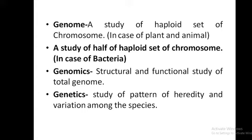Before actually going to chromosomes, there are some terms which need to be known. That is genome — a study of haploid set of chromosomes in case of plants and bacteria. There are 46 chromosomes and the haploid set is 23 chromosomes.